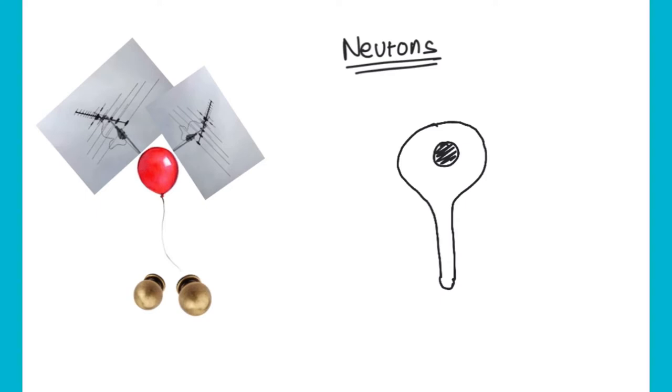The cell body of the neuron is having an extension like the thread in the balloon in the picture. So this extension is known as the axon. Moving on, we have another extension from the cell body.